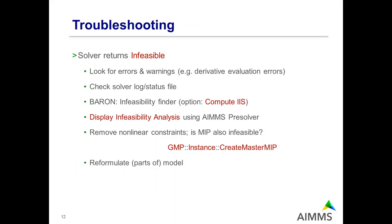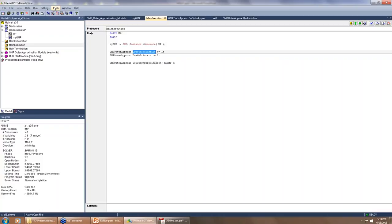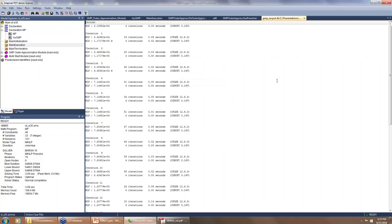For troubleshooting when the solver returns infeasible: look for errors and warnings like derivative evaluation errors, which we saw in the demonstration. Such evaluation errors can cause the solver to fail and return infeasible. You can also check the solver log file or status file. The CreateStatusFile option I showed earlier creates a log file showing each iteration: solving the relaxed NLP, then the MIP, then the fixed NLP, and so on.